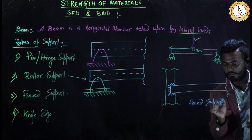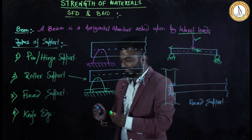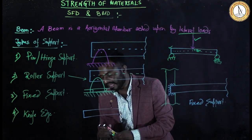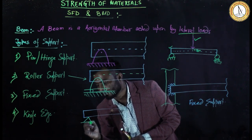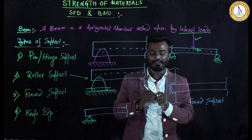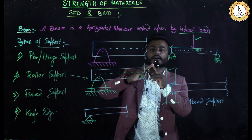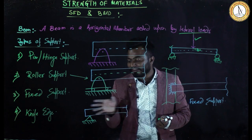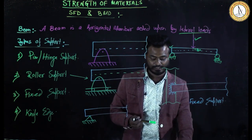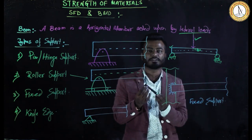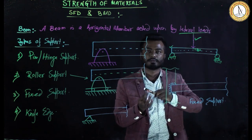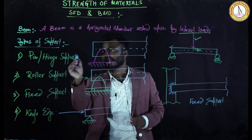In case of knife edge support, the member is just placed over a sharp edge like a knife. The body has the ability to move in the horizontal direction, and rotation is also allowed since nobody is providing resistance. But vertically, the body cannot move — the support provides resistance only in the vertical direction.